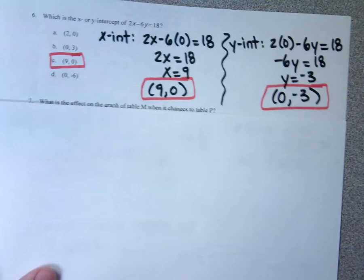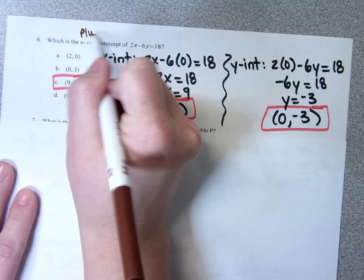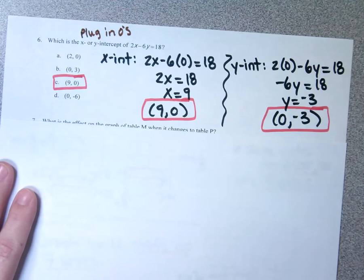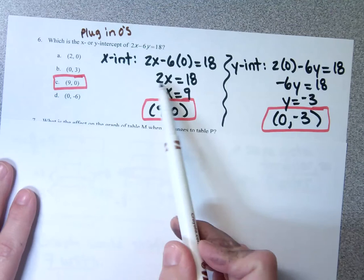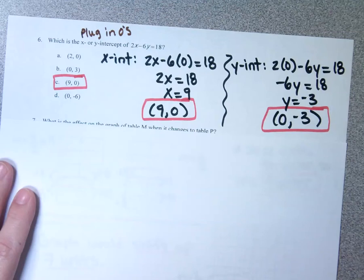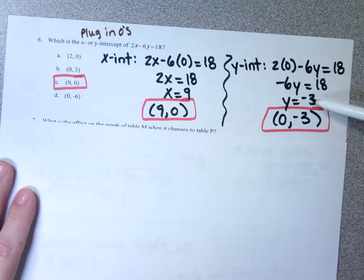Let's go to number 6 — finding X and Y intercepts. There are several ways I could do this, but this is when I plug in my zeros. To find the X-intercept, I put 0 where the Y is. To find the Y-intercept, I put 0 where the X is. Negative 6 times 0 is 0, so all I'm left with is 2X equals 18 — I divide and get 9. If this is the X coordinate, remember it goes first. When I do the Y-intercept, I put 0 in for X, leaving negative 6Y equals 18, and I divide by negative 6 to get negative 3.